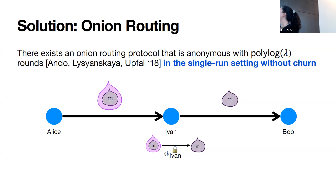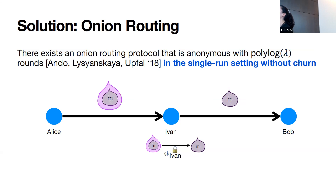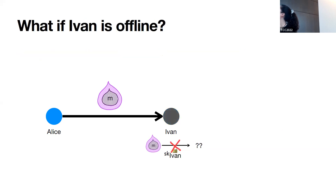Prior work is in the single-run setting without churn — the adversary observes one run with Alice sending one message to Bob. In the real world, Alice might send many messages over a longer time scale and should remain anonymous in this multi-run setting. Also, prior work assumed all servers are online throughout the protocol, which is unrealistic especially with multiple runs. Since people's internet connections are unreliable, servers will go offline unpredictably — we call this network churn.